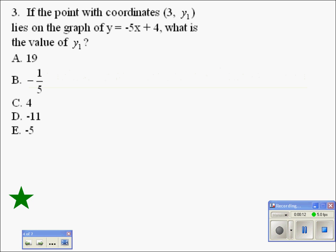If the point with coordinates (3, y1) lies on the graph of y equals negative 5x plus 4, what is the value of y1?